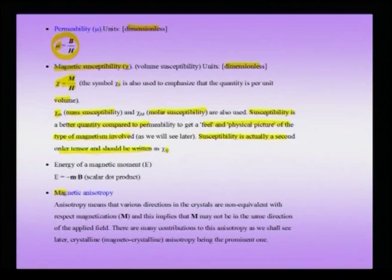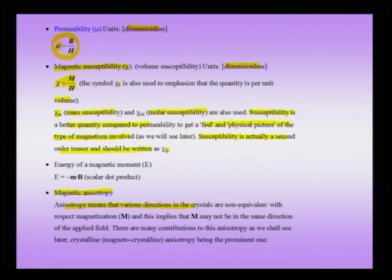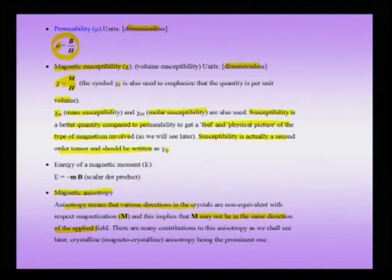Another important quantity is magnetic anisotropy. Anisotropy implies that the property is not equivalent in all directions. For magnetization, this means the magnetization may not be the same in all directions and may not align with the applied field. A single crystal has easy and hard directions for magnetization. For iron, the [001] direction is the easy direction, which changes to [110] and [111] for other materials like cobalt and nickel. This is called magnetocrystalline anisotropy.